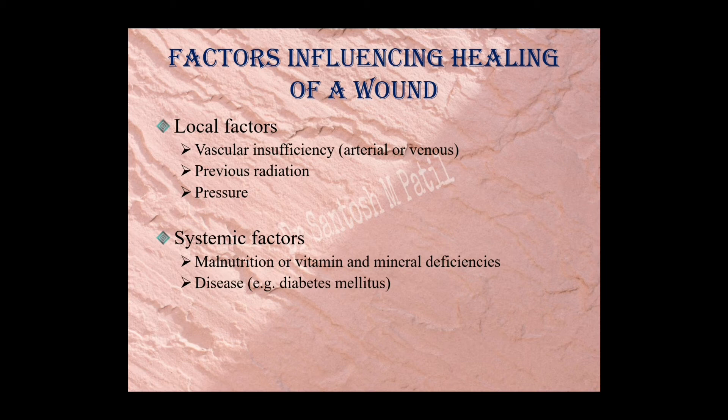Diabetes mellitus is a condition where abnormal glucose levels promote bacterial overgrowth in a high-glucose medium. Diabetes also decreases the process of inflammation — the first stage of inflammation is totally delayed. Neo-angiogenesis from the endothelium is also hampered by diabetes, and diabetes itself causes hypoperfusion to the tissues, again delaying wound healing.